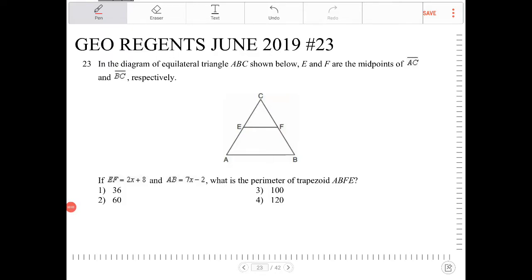In the diagram of equilateral triangle ABC shown below, E and F are the midpoints of AC and BC respectively. If EF is equal to 2x plus 8 and AB is equal to 7x minus 2, what is the perimeter of trapezoid ABFE?